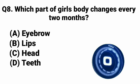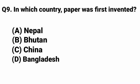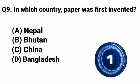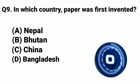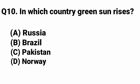Question 8: Which part of a girl's body changes every two months? Answer: Option A - Eyebrow. Question 9: In which country was paper first invented? Answer: Option C - China.